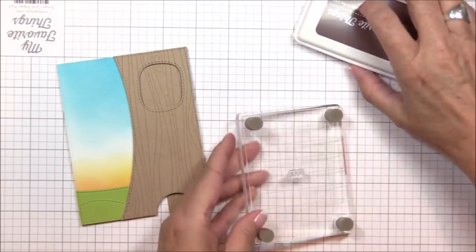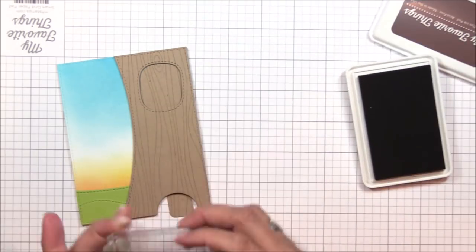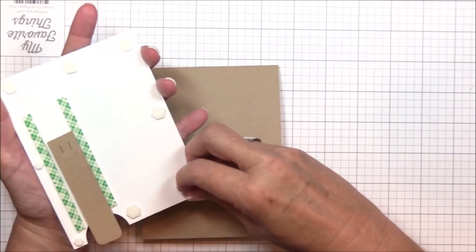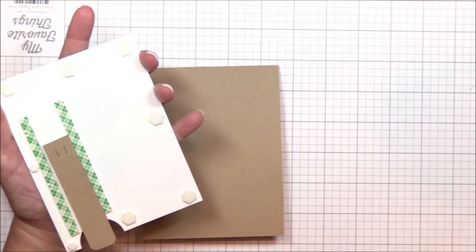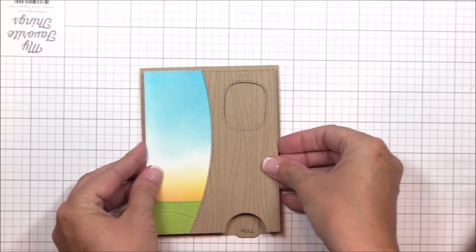I've pulled out my interactive label stamp set for a directional prompt, and I'm stamping the word pull at the bottom of the pull tab using some milk chocolate dye ink. And now I can adhere the image panel to a 4 and a quarter inch by 11 inch craft card base that I've scored at five and a half inches and folded in half.